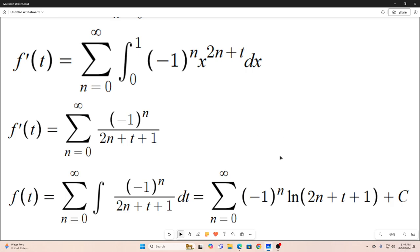Okay. And that evaluates to this. If we take the anti-derivative term by term, we end up with negative 1 to the n times the natural log of 2n plus t plus 1. And then all of that plus c.